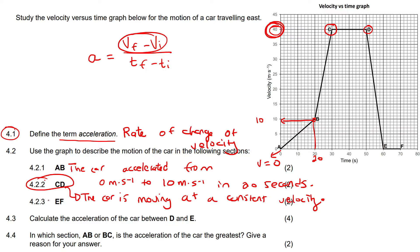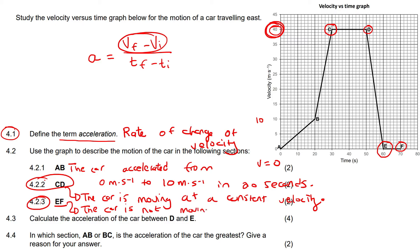Then EF — what is the velocity doing at EF? Now we can say the car is not moving. If you look carefully, at E the velocity is zero, and at F the velocity is also zero. So the object is not moving. The car is stationary.